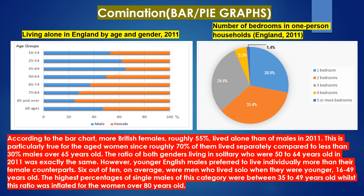According to the bar chart, more British females — roughly 55 percent — lived alone than males in 2011. This is particularly true for aged women, since roughly 70 percent of them lived separately compared to less than 30 percent of males over 65 years old. The ratio of both genders living in solitude who were 50 to 64 years old in 2011 was exactly the same. However, younger English males preferred to live individually more than their female counterparts.